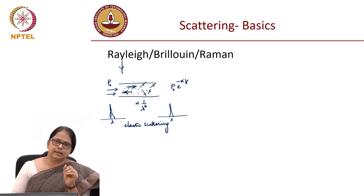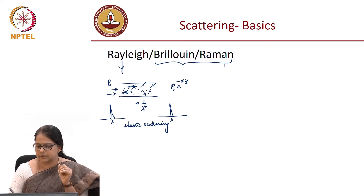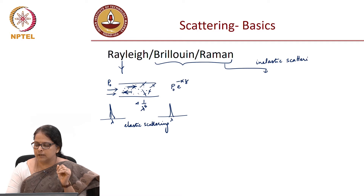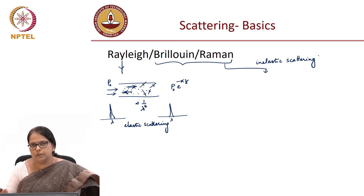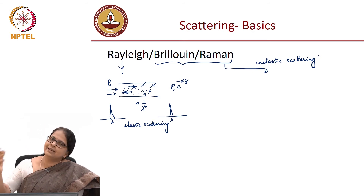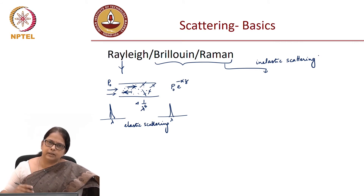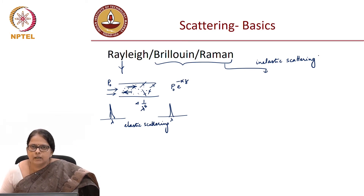Unlike Rayleigh scattering, the Raman and Brillouin scattering processes are because of inelastic processes. The word inelastic means that the incoming electromagnetic wave either loses energy to the medium or it gains energy from the medium. So the energy of the scattered light is not the same as the energy of the incoming light.